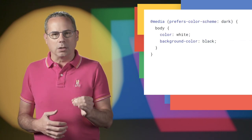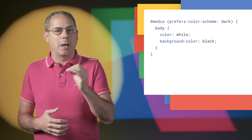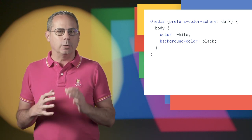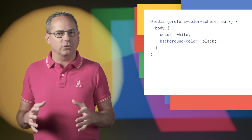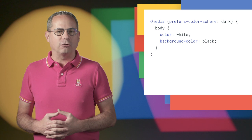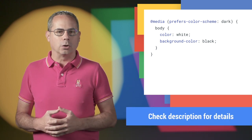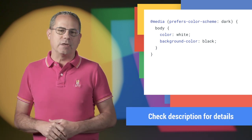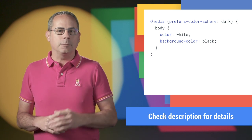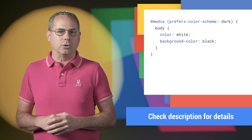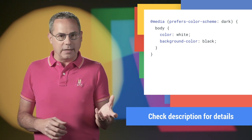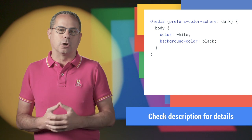Many operating systems now support a dark mode or dark theme. The prefers-color-scheme media query allows you to adjust the look and feel of your site to match the user's preferred mode. Tom has a great article on web.dev with everything you need to know, plus tips for architecting your style sheets to support both a light and a dark mode.